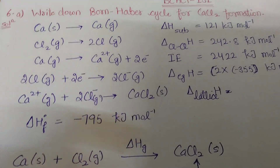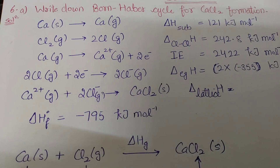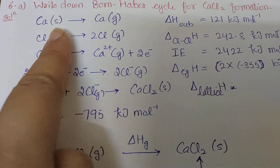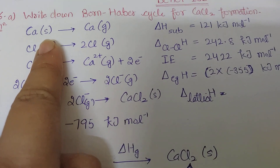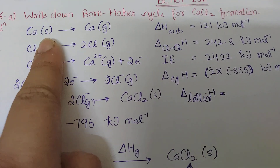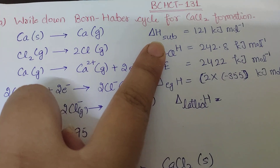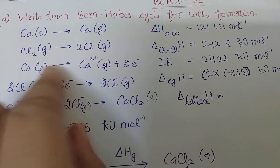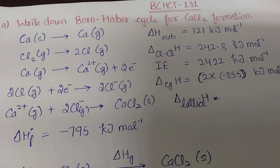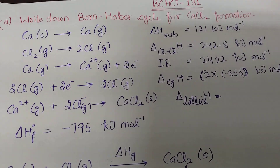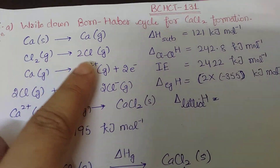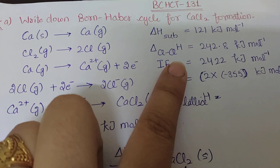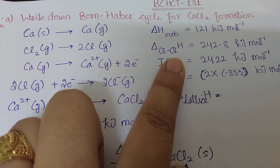In calcium chloride, calcium is in solid state naturally, so we have to convert it to the gaseous state. The heat required to change the solid state into gaseous state is known as heat of sublimation, that is 121 kilojoules per mole. Chlorine gas also needs to be converted to gaseous form, and the dissociation energy is known as energy of dissociation, or heat of dissociation, with a value of 242.8 kilojoules per mole.